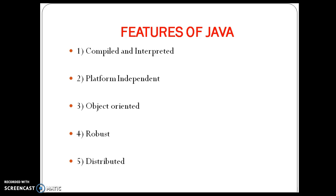The fifth feature is distributed. Java supports distributed communication. In Java, we have a concept called RMI, which is Remote Method Invocation, and it supports distributed communication. By using the RMI concept, different Java systems can collaborate with each other.